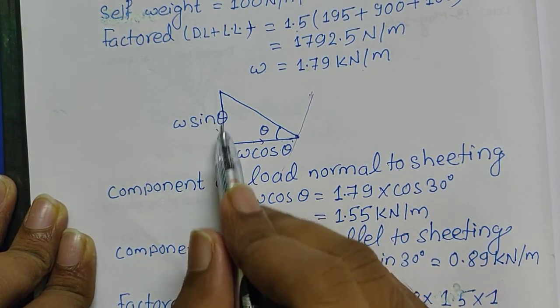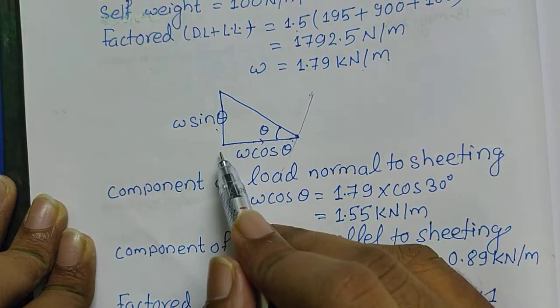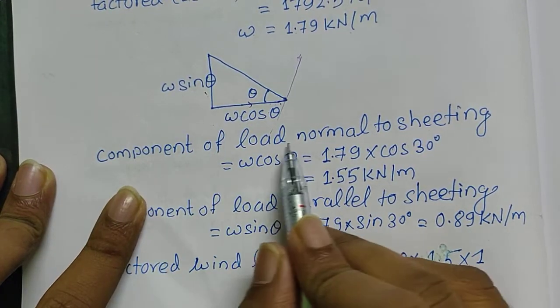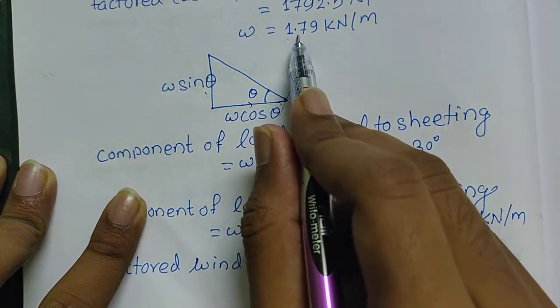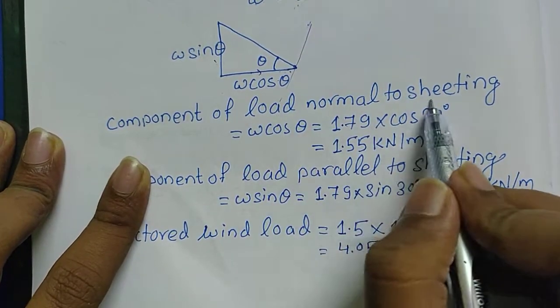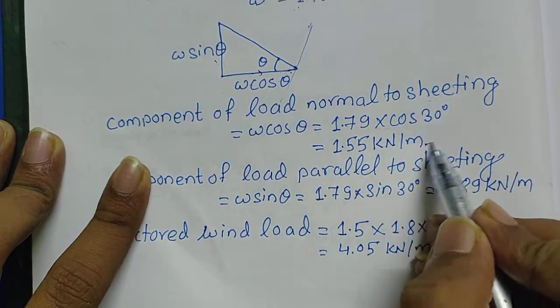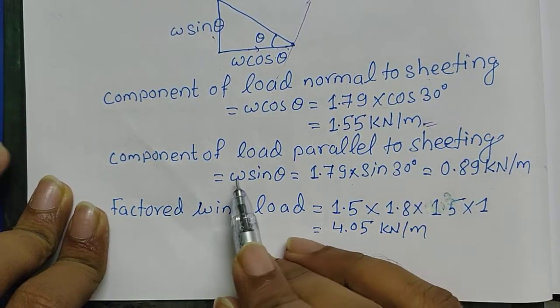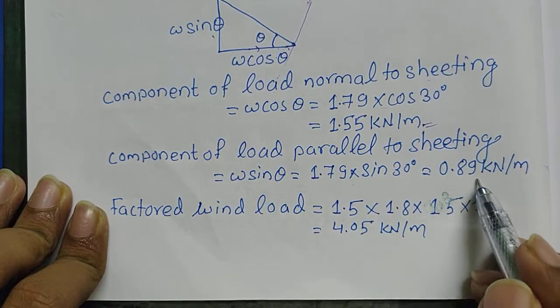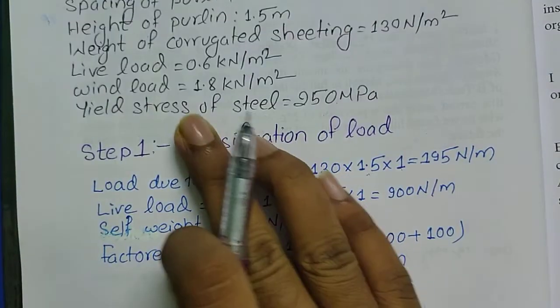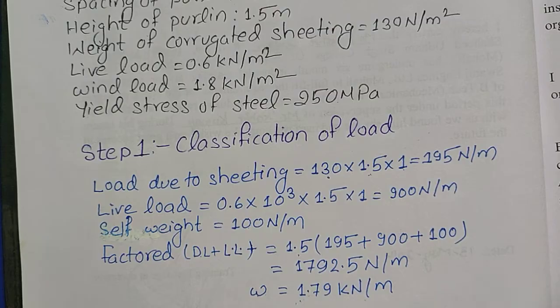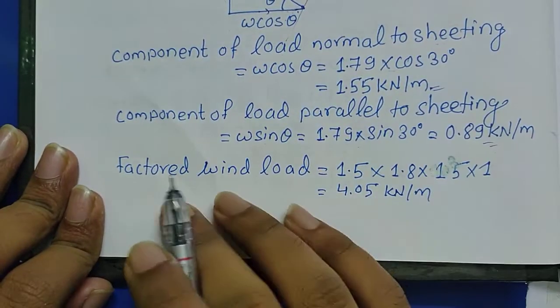Wind load is always considered as normal to the seating. When we resolve this into horizontal and vertical direction, double sin theta is taken as parallel to the seating and double cos theta is taken as normal to the seating. Now the component of load normal to the seating will be double cos theta, so I have calculated its value. The component of load parallel to the seating will be double sin theta.